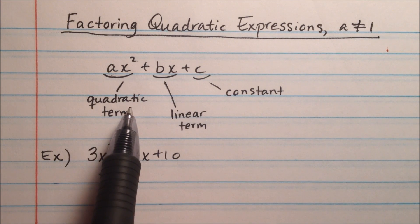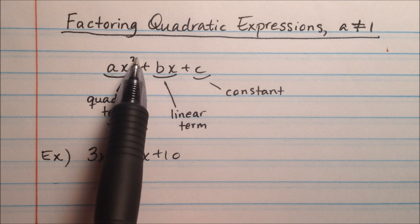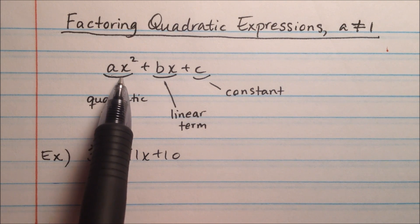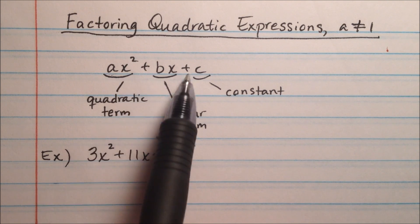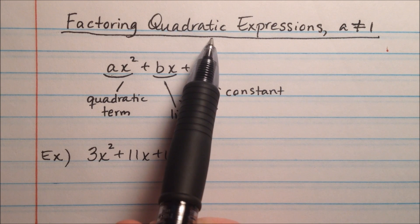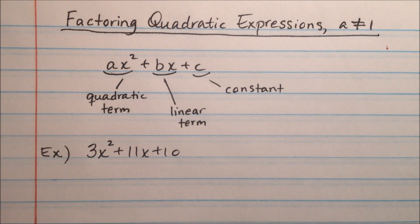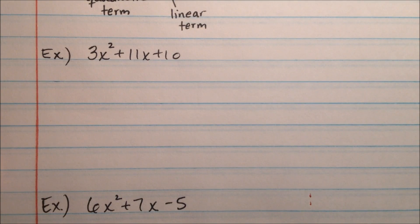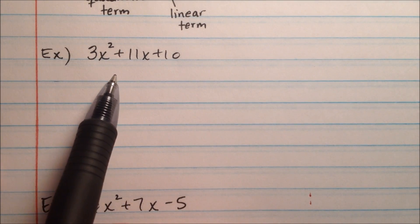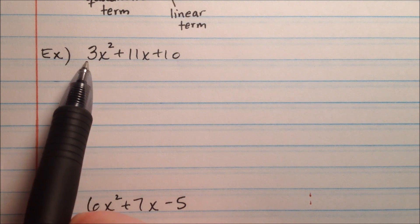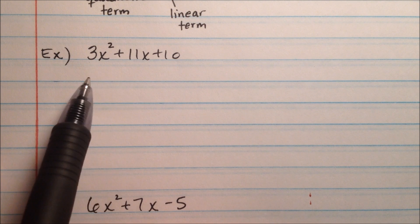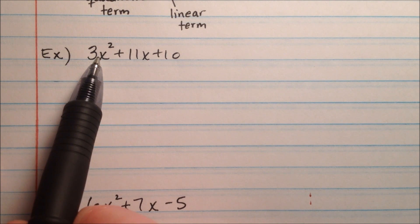The quadratic term is considered quadratic because its degree is 2, or the exponent on this variable is 2. Since 2 is the largest exponent, we call it degree 2 and classify it as quadratic. When we look at our first example, we have 3x² + 11x + 10. We can't do the same thing as last time because there's a 3 out here — x times x does not make 3x.